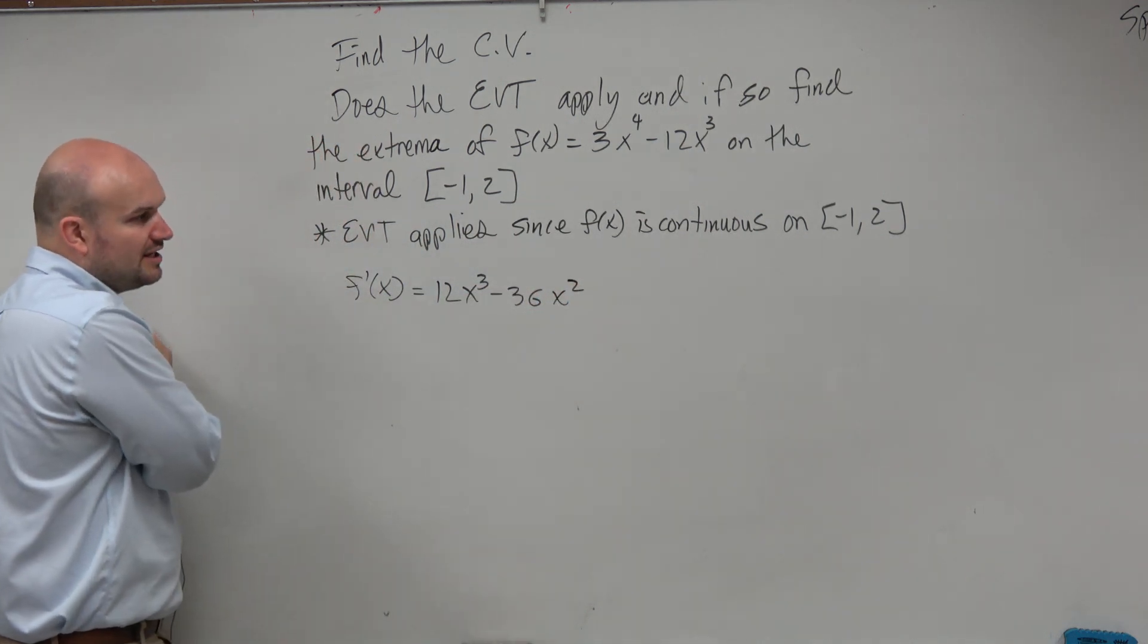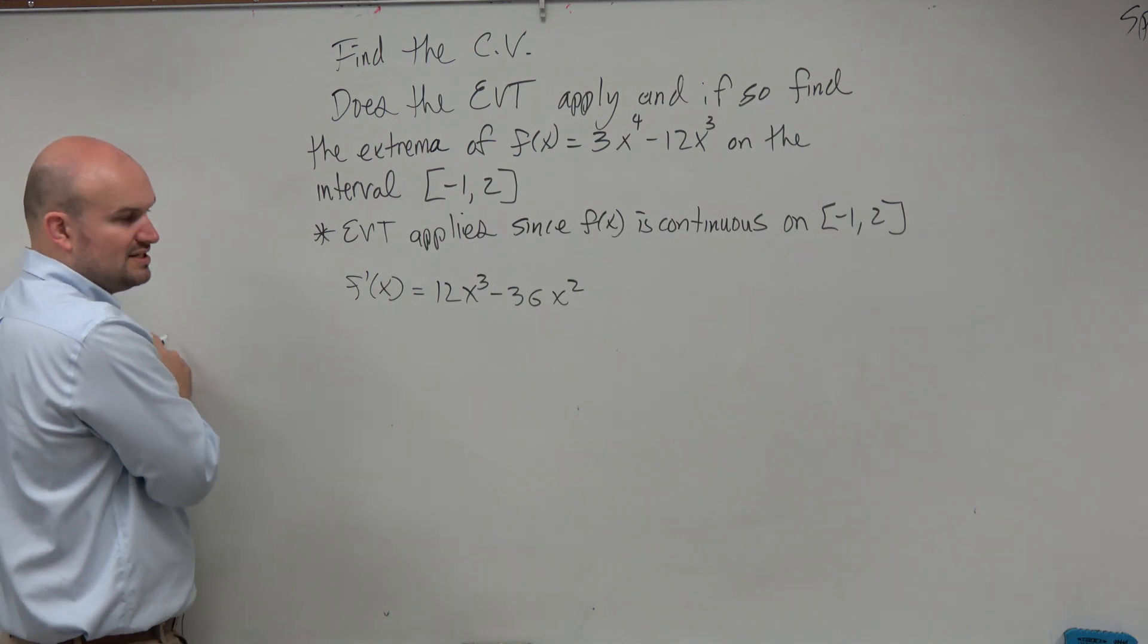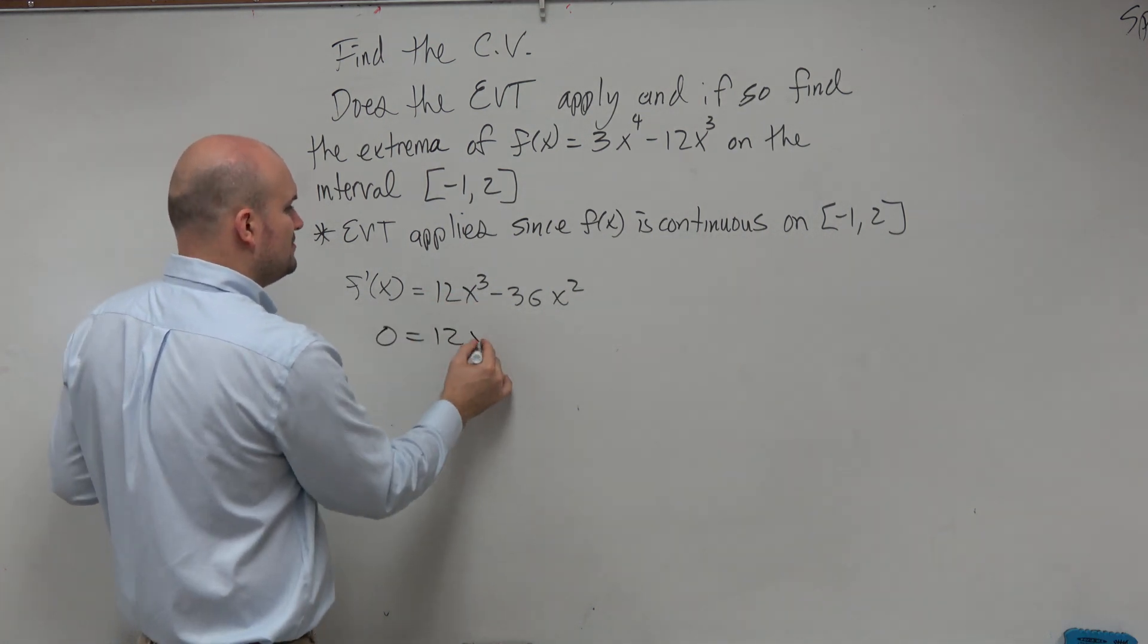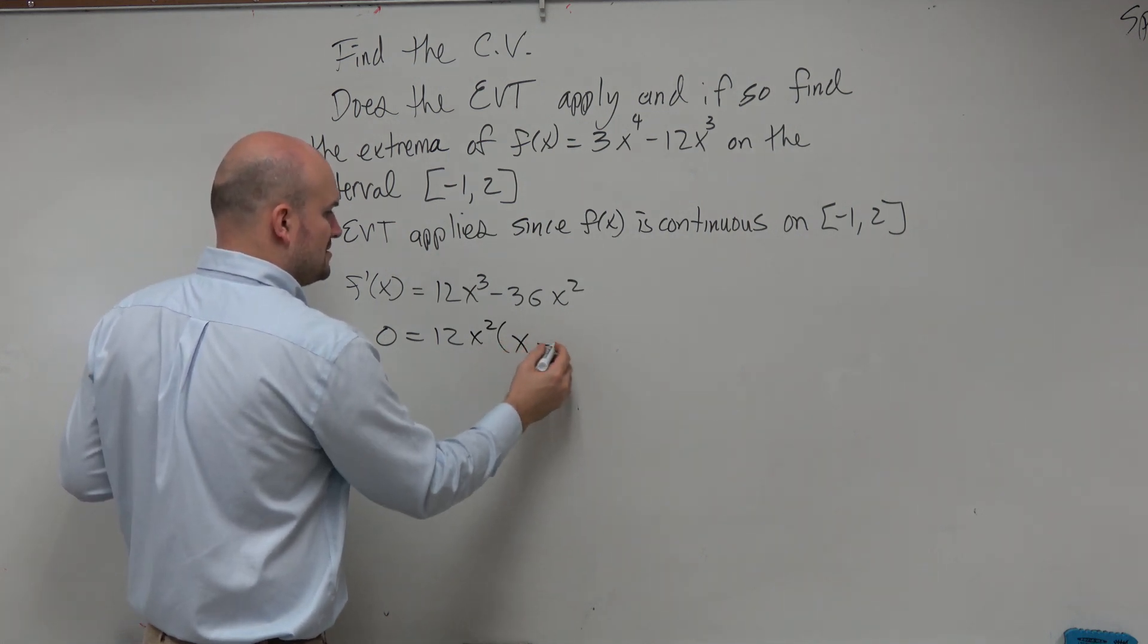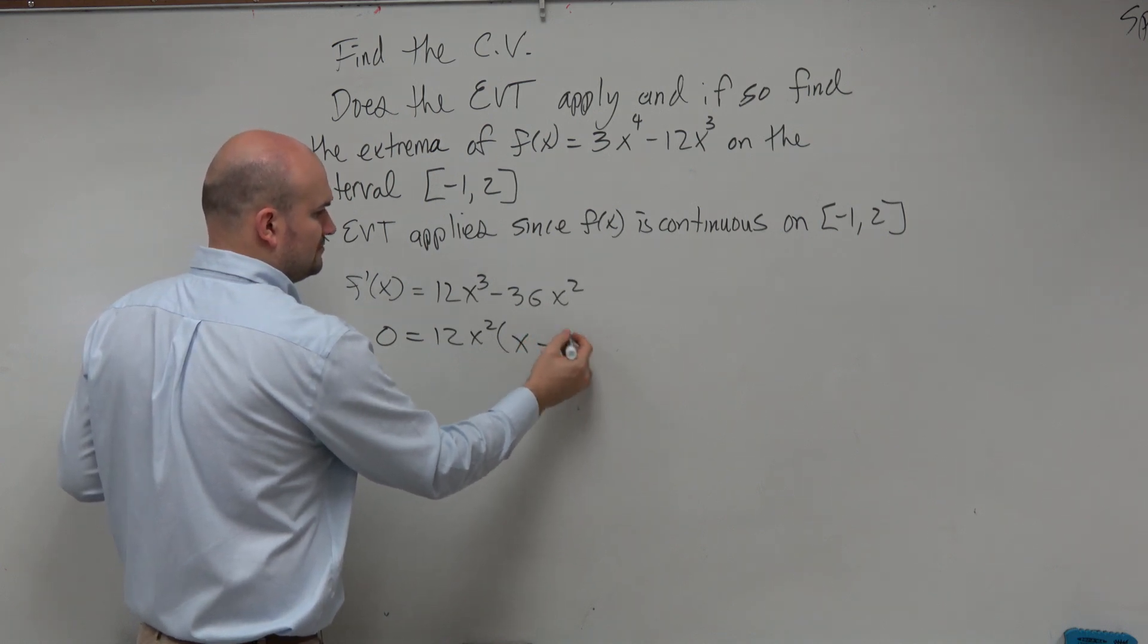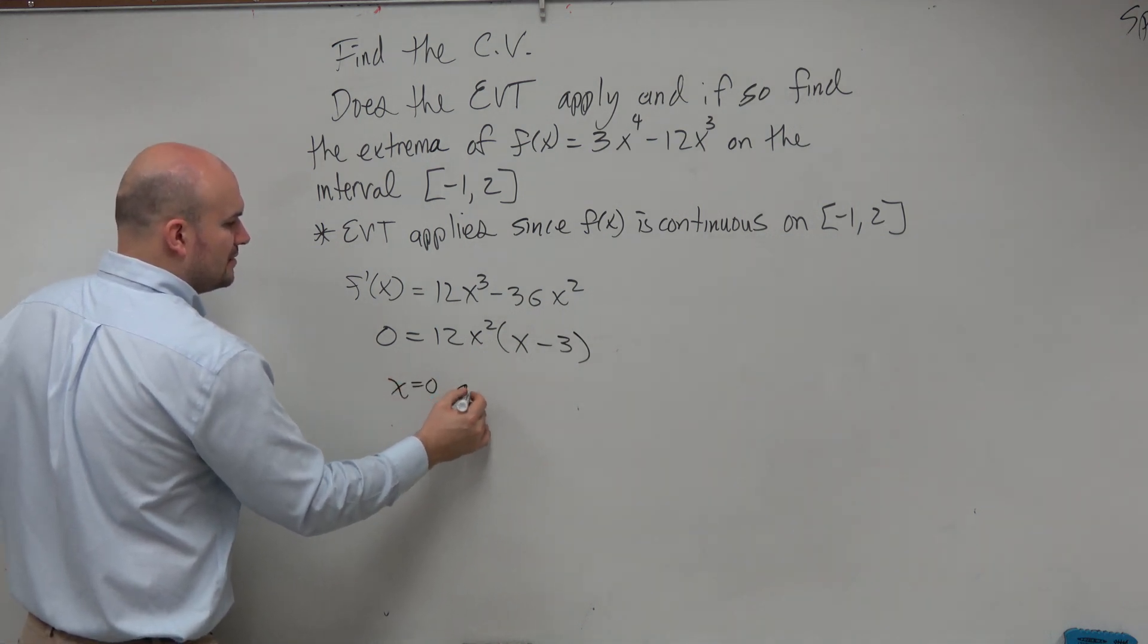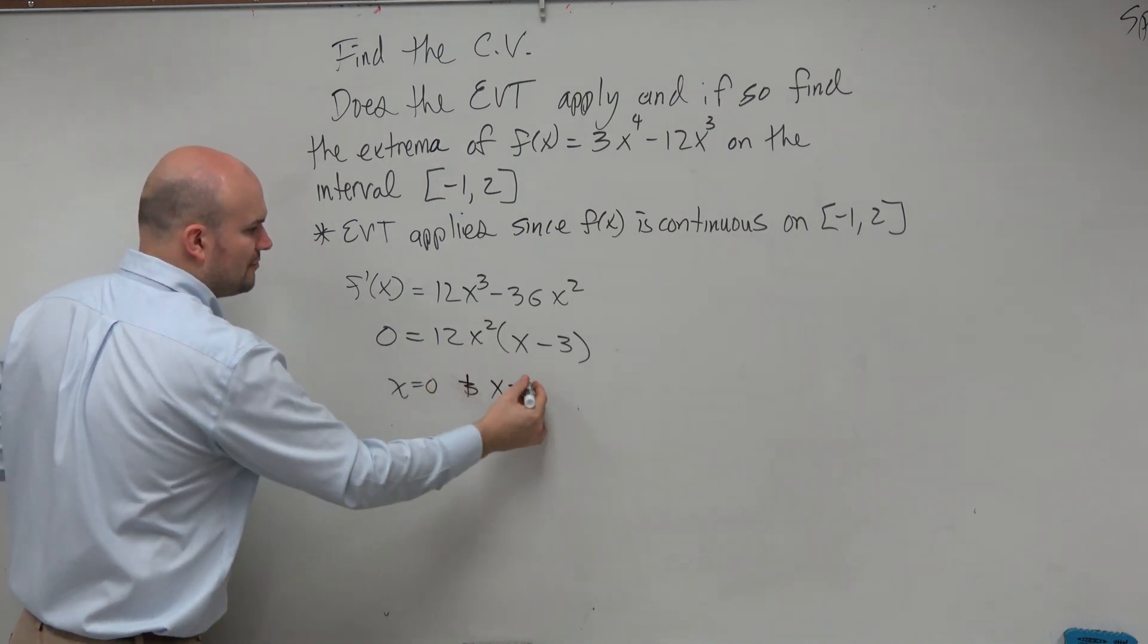Well, that is definitely a continuous function. There's no undefined values. So therefore, let's just set it equal to 0 to find the critical values where it's equal to 0. I could also factor out a 12x^2. So when I factor out a 12x^2, I'm going to be left with x - 3. So therefore, I have x = 0 and x = 3.